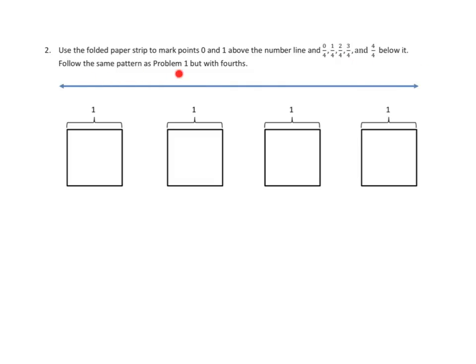Follow the same pattern as problem 1, but with fourths. So, I'm going to assume that you've gotten problem 1 correctly, and I also cannot work with a folded paper strip. But let's go ahead and mark our points 0 and 1. We're just going to go ahead and make points here at each end. So, I've got this whole big number line.